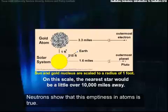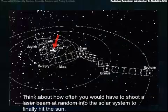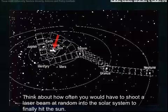Neutrons show that this emptiness in atoms is true. Think about how often you would have to shoot a laser beam at random into the solar system to finally hit the sun.